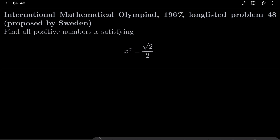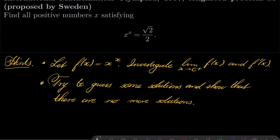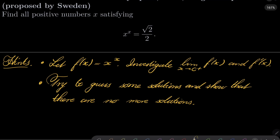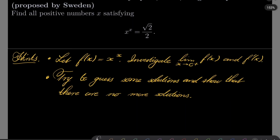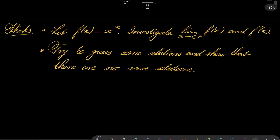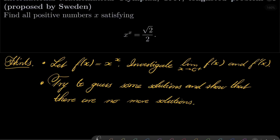Here are my hints for this problem. First, let f of x be equal to x to the power of x. Investigate the limit as x goes to 0 of f of x and investigate the derivative of this function. We'll see on which intervals this function is increasing and decreasing. Then try to guess some solutions and show there are no more solutions, which will close the problem. Give this problem a try and I will see you in just a minute.